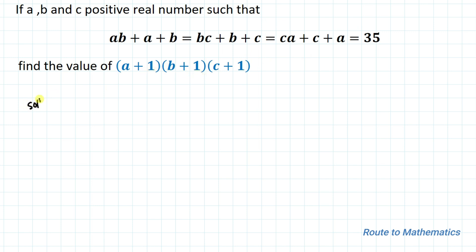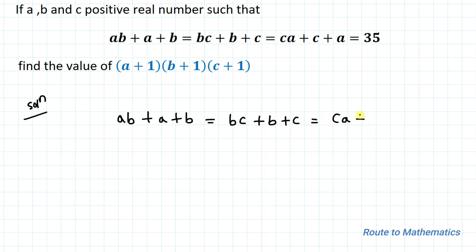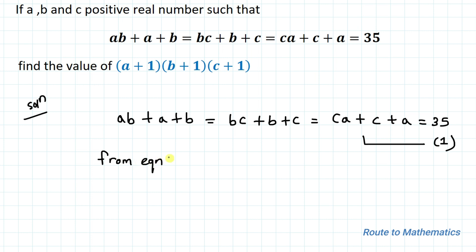Without any delay, let's start the solution. We have given AB plus A plus B equals BC plus B plus C equals CA plus C plus A equals 35. Let's take it as equation 1. From equation 1, we can write AB plus A plus B equals 35.